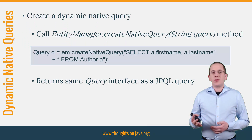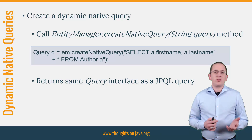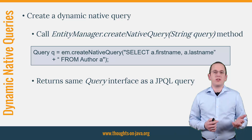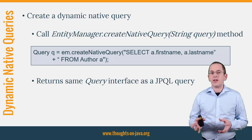Creating a dynamic native query is quite simple. The EntityManager interface provides a method called createNativeQuery for it. This method returns an implementation of the query interface, which is the same as if you call the createQuery method to create a JPQL query. The code snippet on the slide shows a simple example in which I use a native query to select the first and last names from the author table.